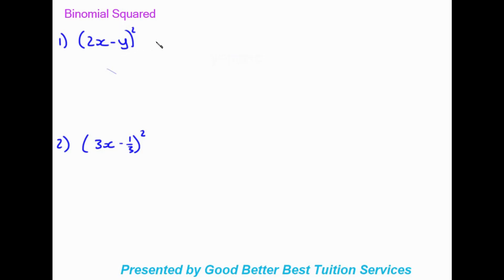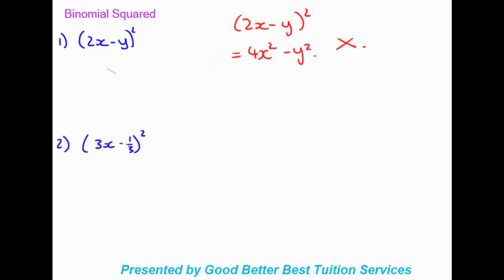Moving on to the last type — binomial squared. A very common mistake here is when people square whatever's inside the brackets directly, saying 4x squared minus y squared. That is wrong. Whenever we are squaring a binomial in brackets, we need to times the bracket by the same bracket — not the terms inside by themselves, but the whole bracket by the same bracket.